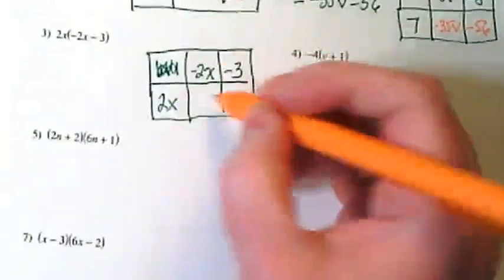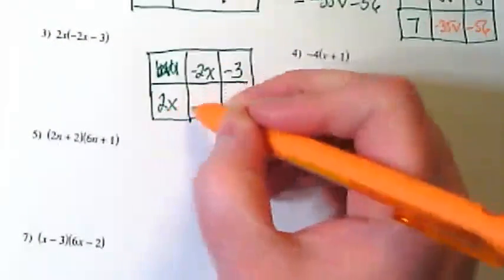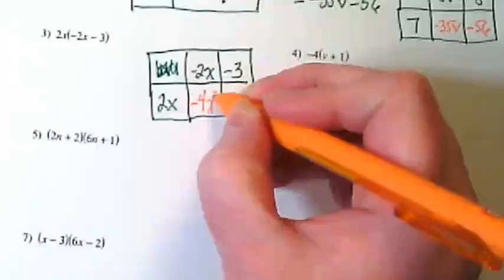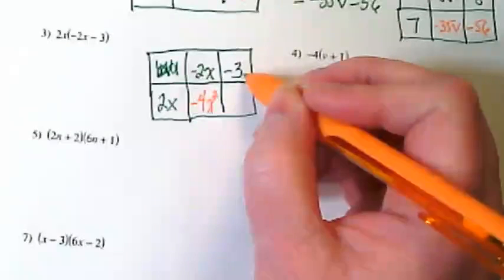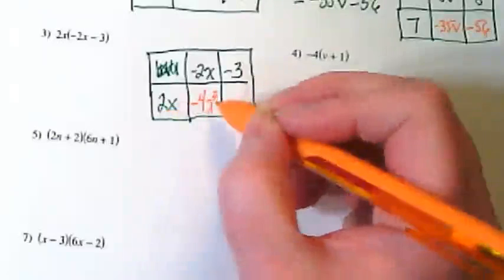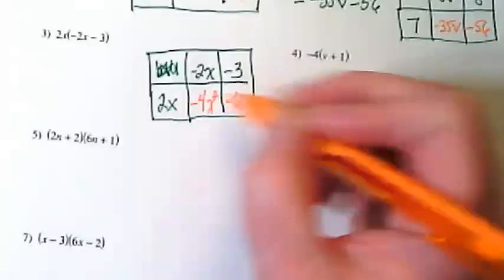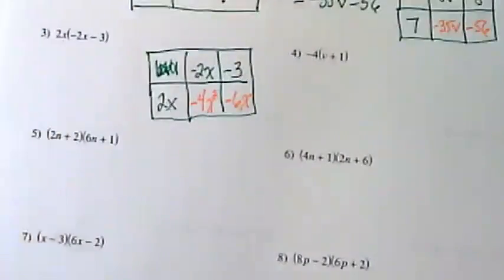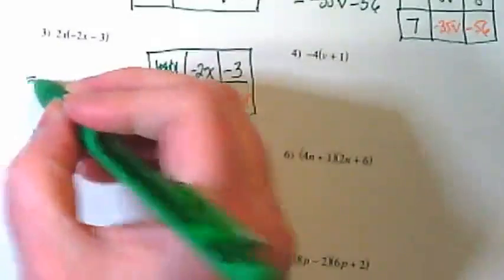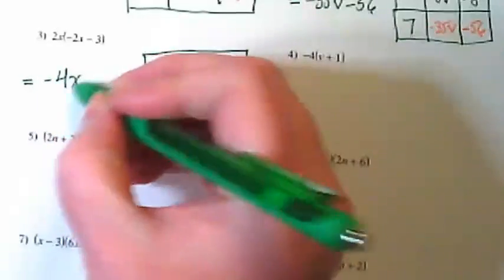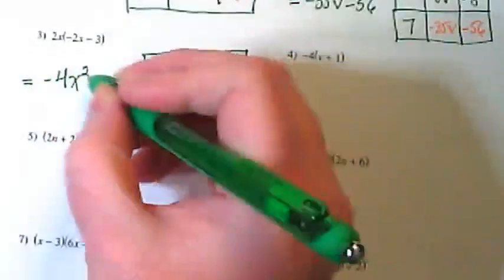Step three is to multiply to get each box's value. We've got negative 2 times positive 2, so we're going to get negative 4, and we have x times x, so we're going to end up with x squared. And then we have negative 3 times positive 2, so we get negative 6x. We are going to rewrite our answer in standard form, which is negative 4x squared minus 6x.